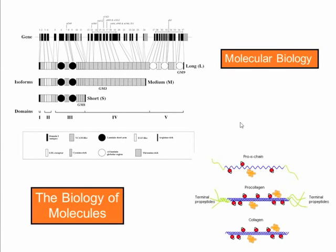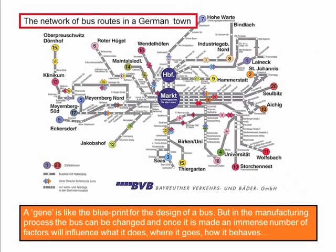I think collagen is a good illustration of the difference between molecular biology, which is really looking at gene level activity, and the biology of molecules, which is looking at what happens to proteins after they've been transcribed. The difference between the two is a bit like the difference between having an understanding of the alphabet and an understanding of literature — of Shakespeare.